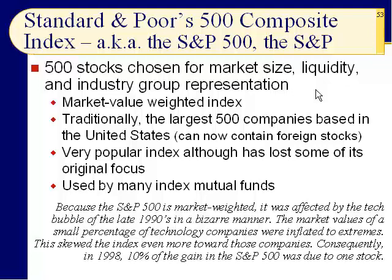For example, around 1996, Daimler-Benz — Mercedes-Benz — bought Chrysler, and it became Daimler-Chrysler. S&P said: you just bought one of our largest companies, so we'll let Daimler-Chrysler into the S&P 500. Similarly, BP (British Petroleum) owns Arco and Amoco. So they allow some foreign companies into the S&P 500, but those are just a few.